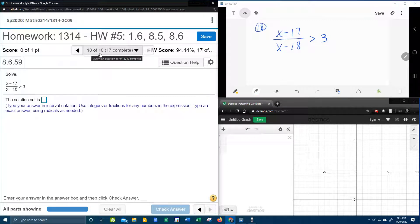Alright, here we go. Question number 18 of 18. This is our last problem on our college algebra homework number 5 in MyLabMath, and I did save the best for last. Here we have a rational inequality. It says (x - 17)/(x - 18) is greater than or equal to 3, and they want the solution set using interval notation.